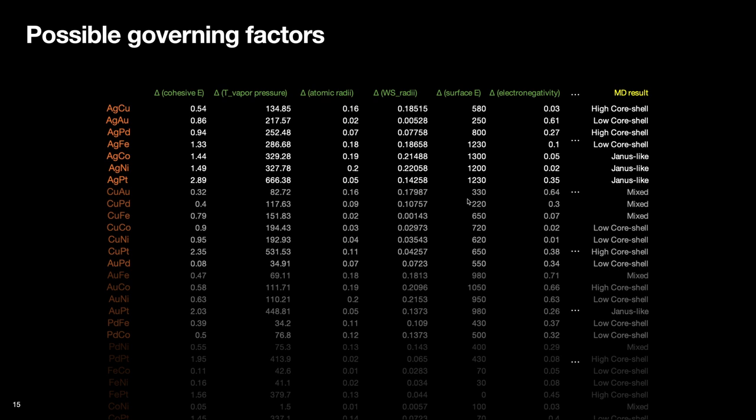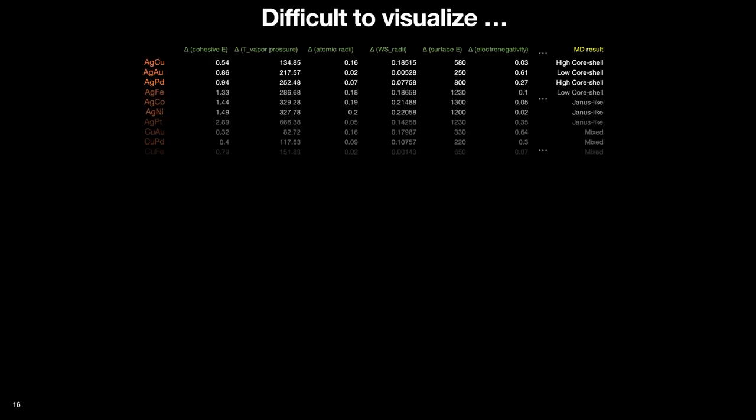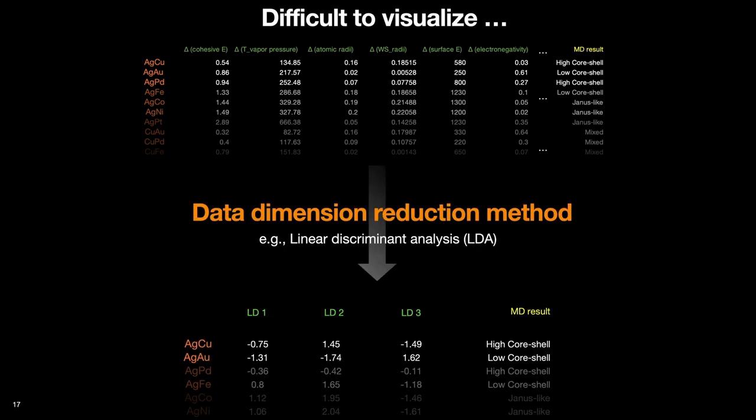The easiest way would be to visualize the whole thing to see the relationship between the features and the MD results. But as we have many features, it was hard to visualize. So what we did was that we used some data dimension reduction method, such as linear discriminant analysis, LDA.